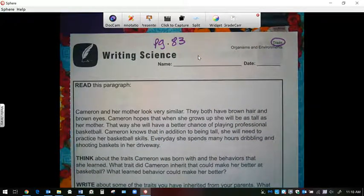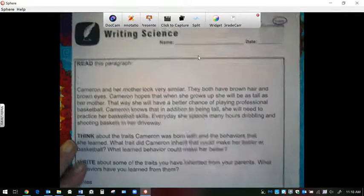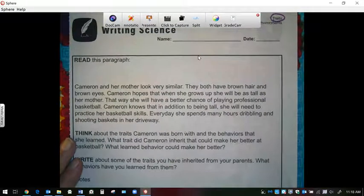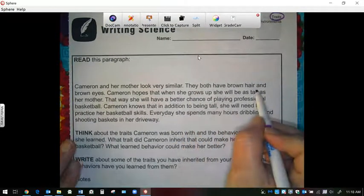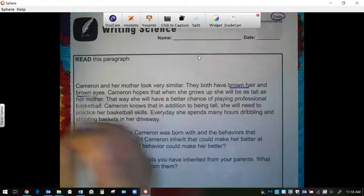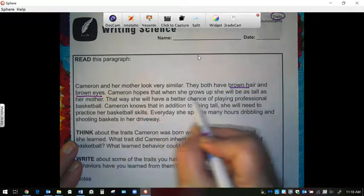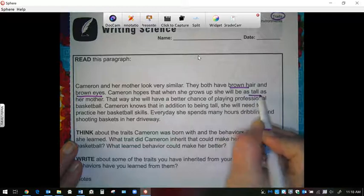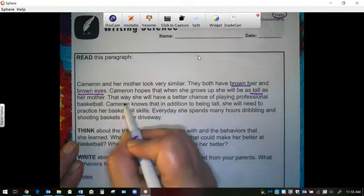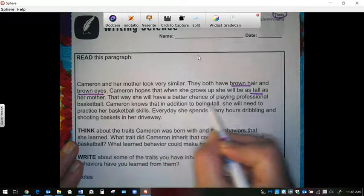You're going to read this paragraph, so we'll read it together. Cameron and her mother look very similar. They both have brown hair and brown eyes. Cameron hopes that when she grows up she will be as tall as her mother.